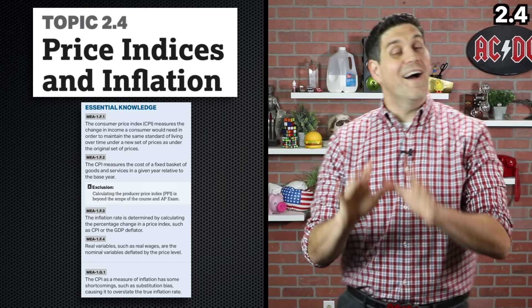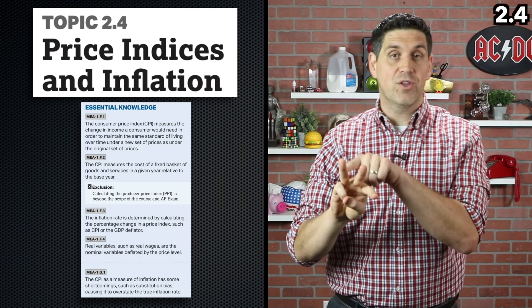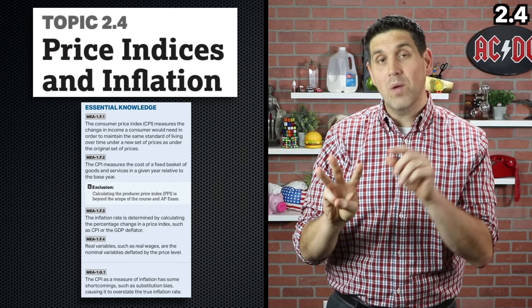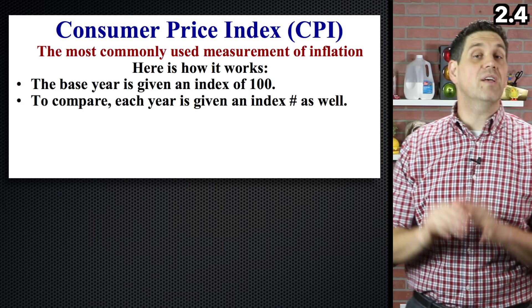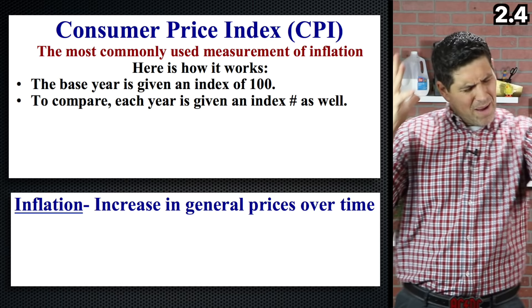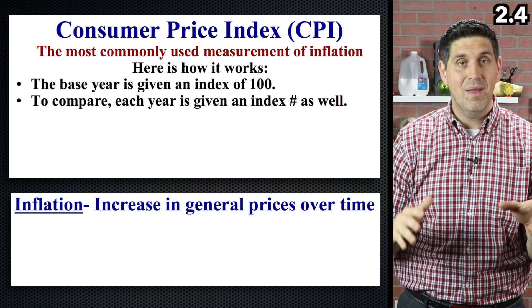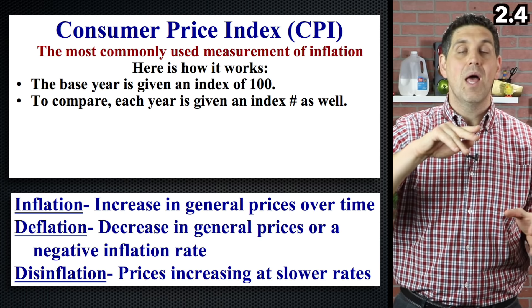Jumping into topic 2.4: price indices and inflation. The three things every economy wants are growth over time (measured with GDP), reduced unemployment, and stable prices — that's what inflation is about. Now you have to jump into more calculations. The Consumer Price Index, or CPI, is the most commonly used measurement of inflation. They take a market basket of goods and services and track it over time to see if prices went up or down. Generally prices go up — that's inflation. Sometimes prices fall — that's deflation. And when inflation is rising but at a slower rate, that's called disinflation.